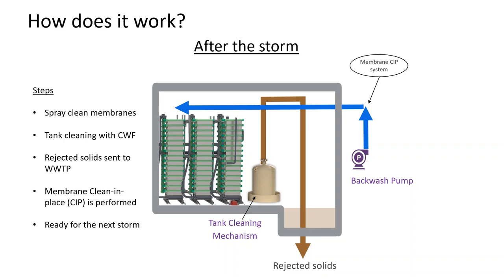After the storm, the membranes will be spray-cleaned with water, and the tank uses the self-regulating CWF — the controlled water flusher — as a tank cleaning mechanism to clean the floor after the storm. The rejected solids from the membrane and from the tank cleaning are sent to the wastewater treatment plant or wherever solid processing is needed. After the tank is completely drained and clear, membrane clean-in-place is performed using a reversible backwash pump and the chemicals Mike mentioned, getting the system ready for the next storm.